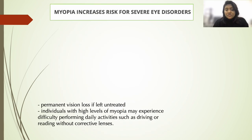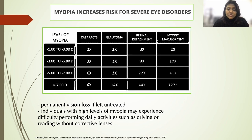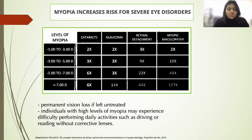Myopia also increases the risk of severe eye disorders. As you can see in this table, as the level of myopia increases, the risk of ocular pathology also increases. For example, the risk of glaucoma is about two times in a low myope, whereas with high myopia the risk is 14 times. For myopic maculopathy, a low myope has twice the chance, while myopia between five and seven diopters carries about 41 times the risk.